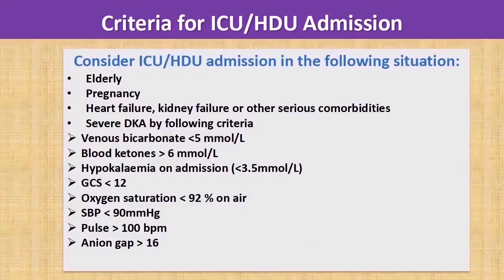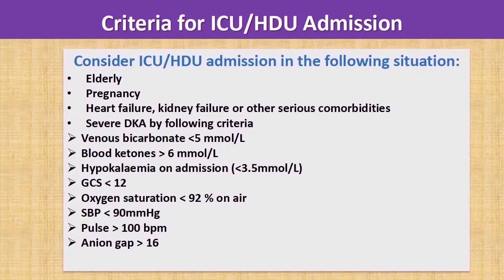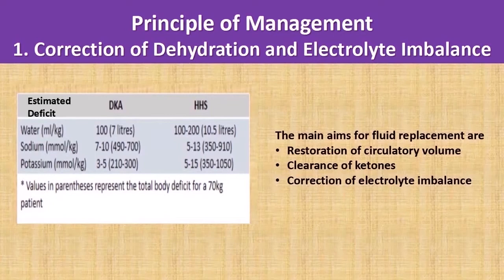Before moving on to the most important section of the lecture, I would like to introduce the criteria for ICU and HDU admission. Populations such as elderly subjects, pregnant mothers, or subjects with heart failure, kidney failure, or other serious comorbidities need to be monitored closely in the ICU or HDU. Also, any subject with severe DKA must be monitored in the ICU or HDU setting.